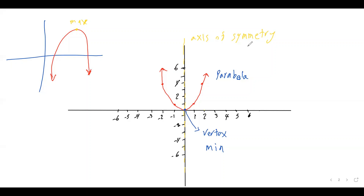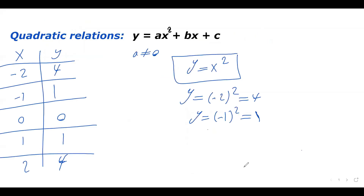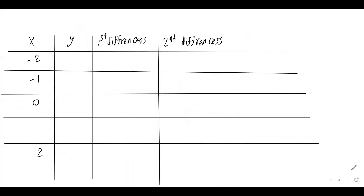Another key property of quadratics is that the second difference is constant. Using our table of values with x values negative two, negative one, zero, one, two and corresponding y values four, one, zero, one, four, let's find the first differences.